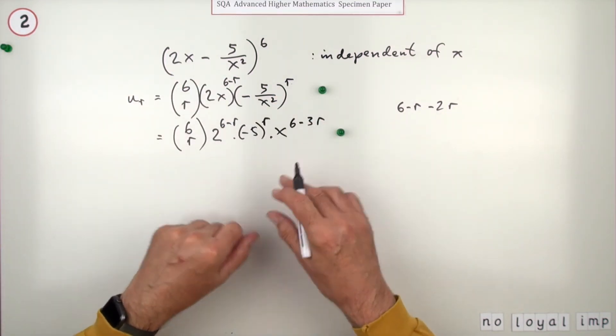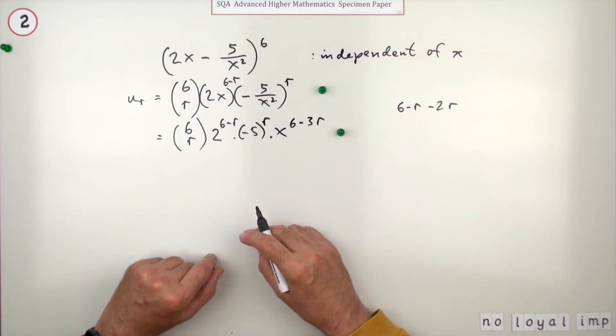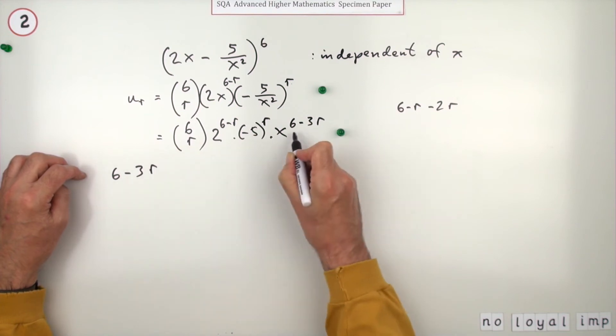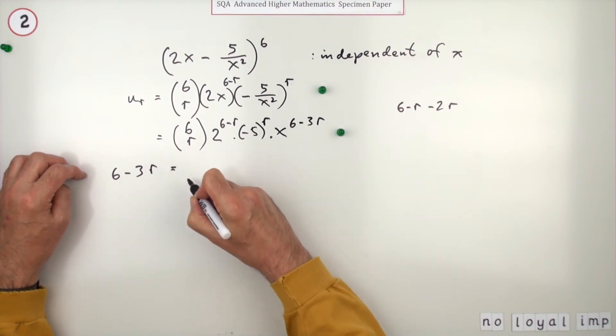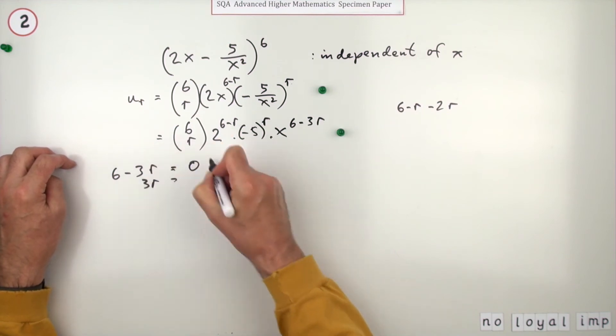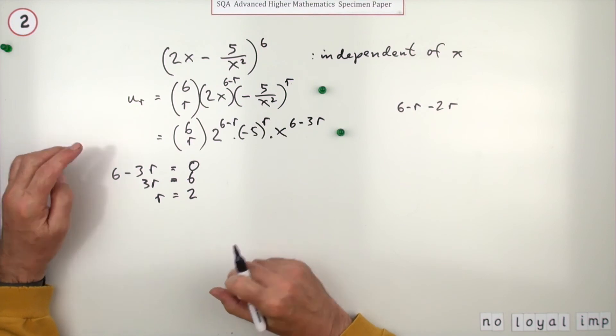So that's the term simplified. There's the general term simplified. Now you just need to identify that term. It says independent of x. Independent of x means you're looking for 6 minus 3r—the power of x has to come to zero. So 3r would have to be six, so r is going to be two.